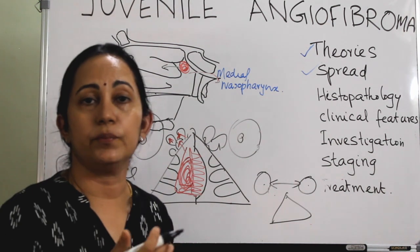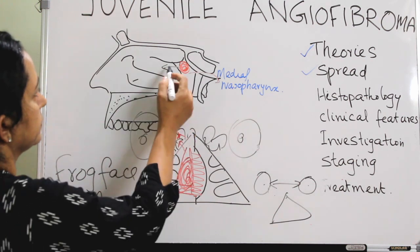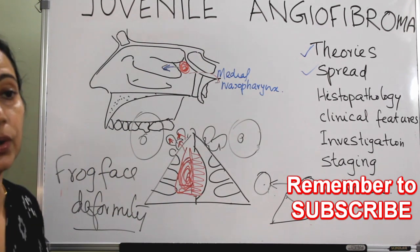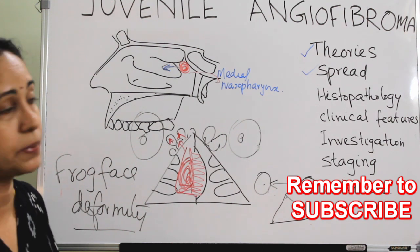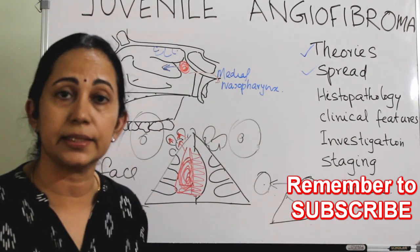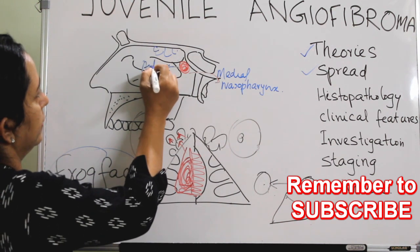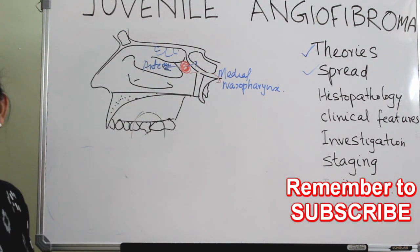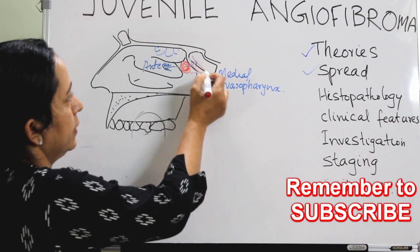Long-standing angiofibroma leads to frog face deformity. Anteriorly, it can erode the anterior face of the sphenoid sinus and encroach into the sphenoid sinus. To summarize anterior spread: initially unilateral nasal block with epistaxis, then septal deviation causing bilateral nasal block, followed by ethmoid sinus involvement, flattening of the nasal bridge, widening of intercanthal distance, and proptosis producing the classical frog face deformity.